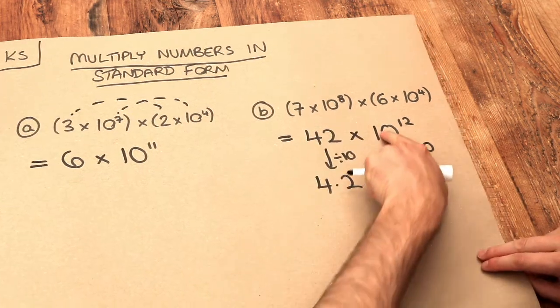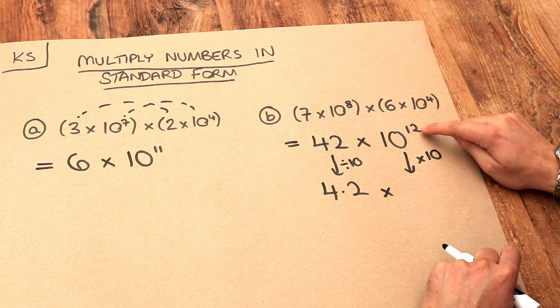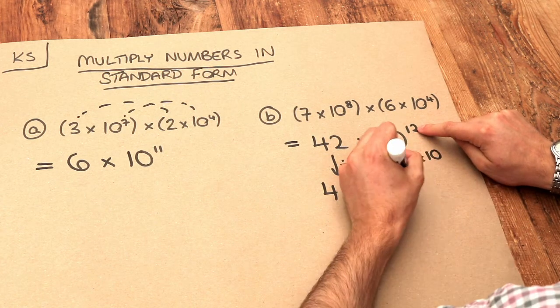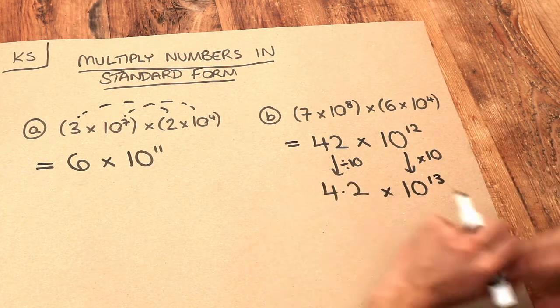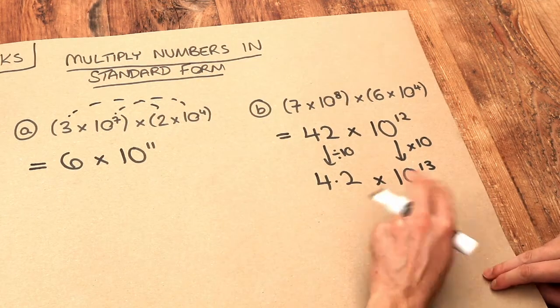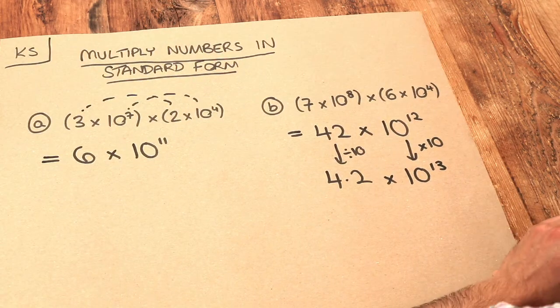So if I times this by 10, that's just going to increase the index by 1. It's 10 to the 13 because you have one extra 10 that you're multiplying together. And that's now in standard form because that's between 1 and 10 and we are done.